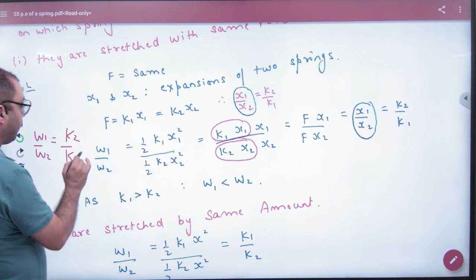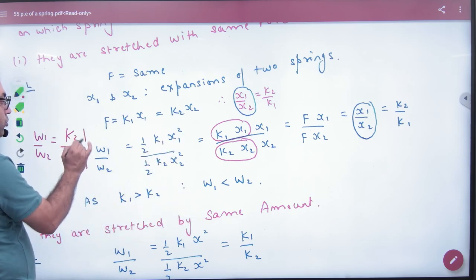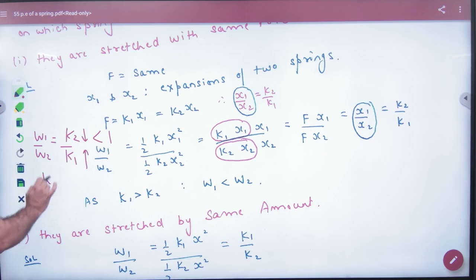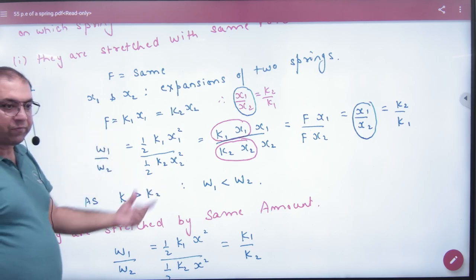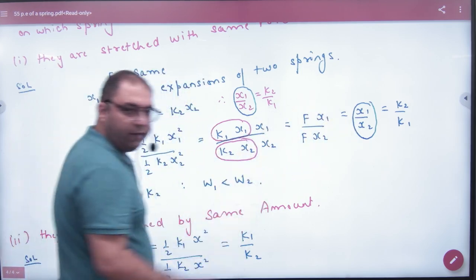K1's spring constant is big, K2 is small. So this fraction is less than 1. Therefore W1 less than W2. You have to understand how this happened. Work done formula, force cancels, this term has been cancelled. This is the ratio X1 by X2.